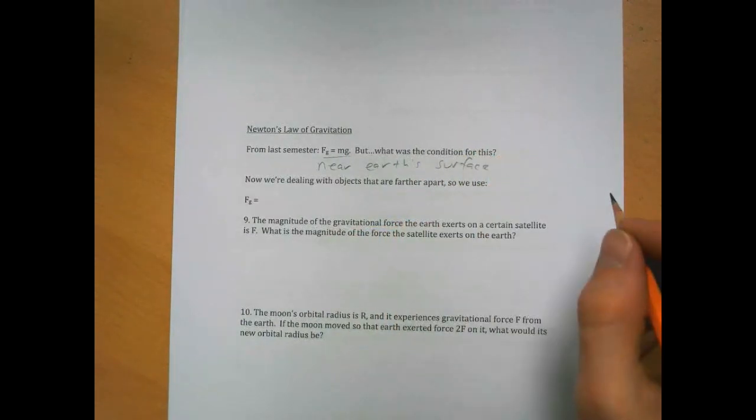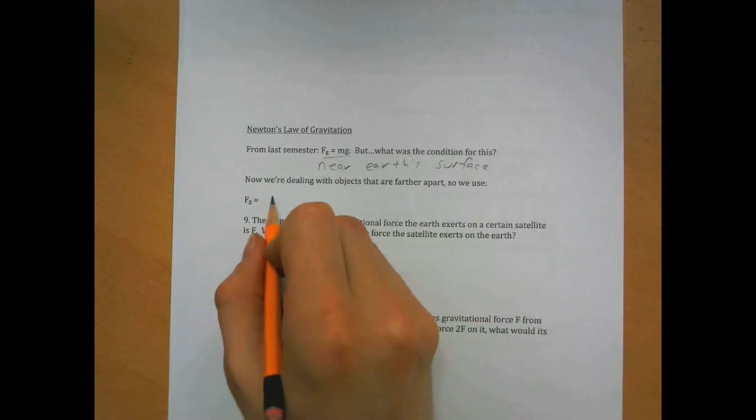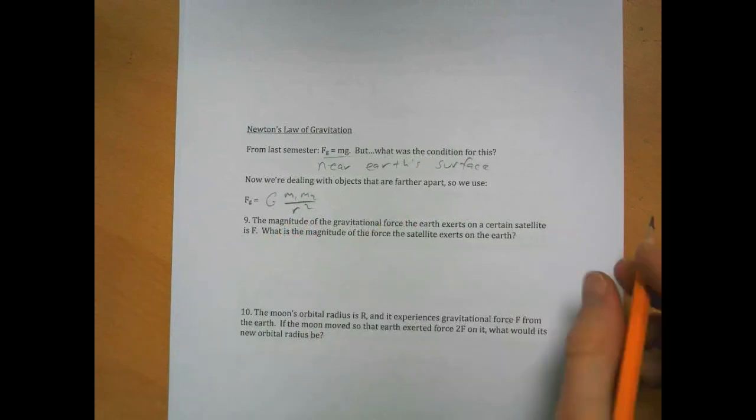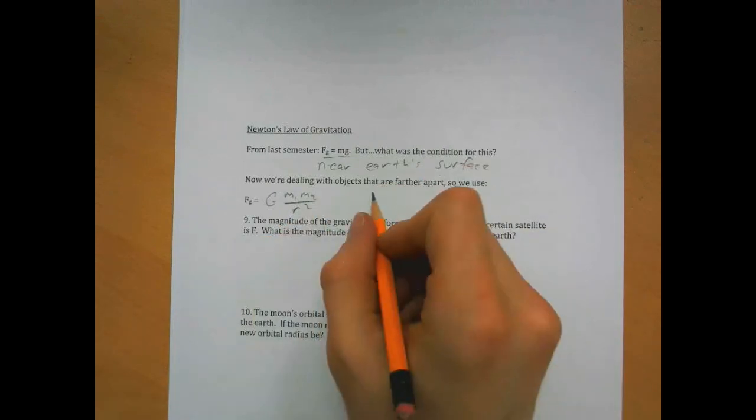Now we're dealing with objects involved in planetary orbits, so we use the full law of gravitation, which I told you last semester is gm1m2 over r squared.